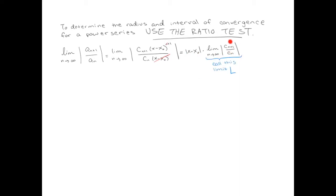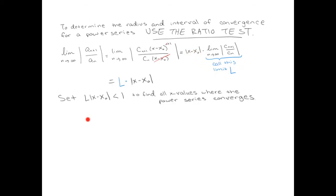Depending on the problem, you might have different expressions for c_{n+1} over c_n. Whatever you get for that limit, let's call it l. So you get x minus x_0 multiplied times l. Remember the criterion for the ratio test: if that value is less than 1, then the power series converges.